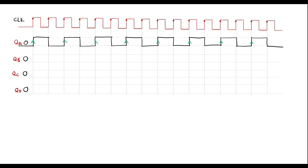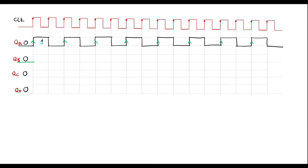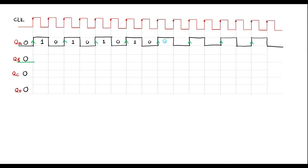At the beginning QB is 0. The QB waveform goes: 0, 0, then high for 2 pulses, low for 2 pulses, high for 2 pulses, and so on — alternating every 2 clock pulses.